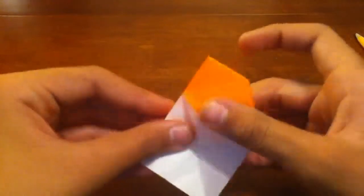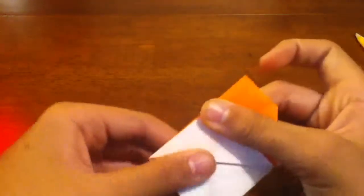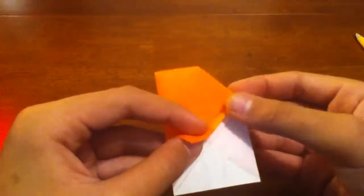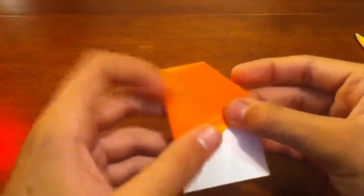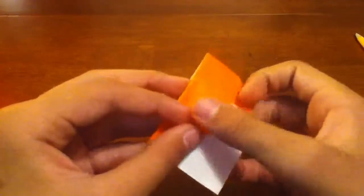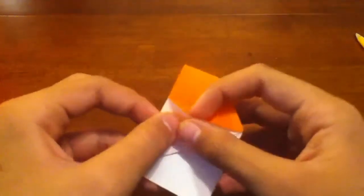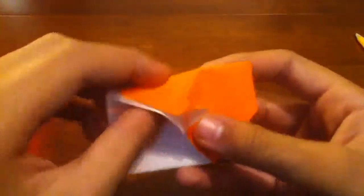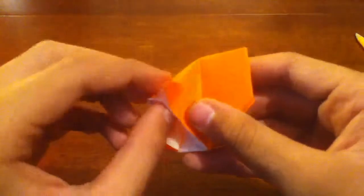Then what you're going to do is rabbit ear fold this. So like that. And then just collapse it and then you should get a rabbit ear.